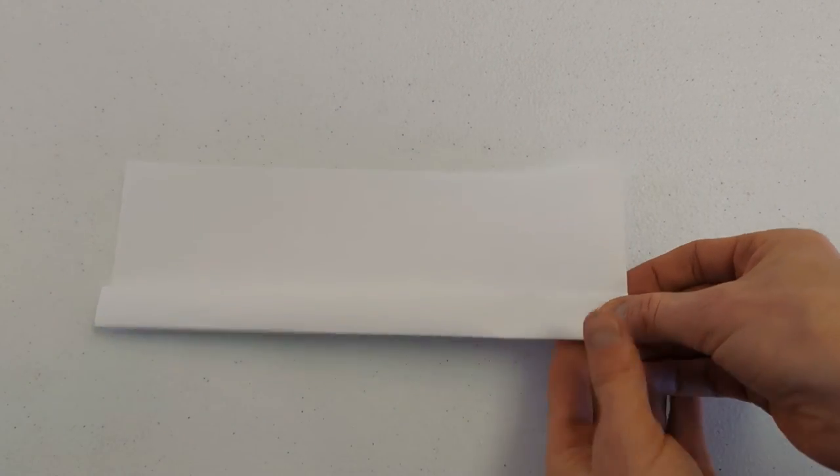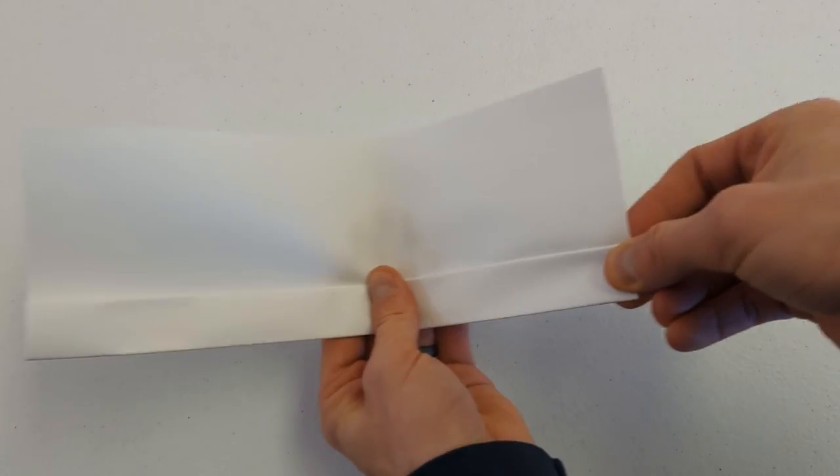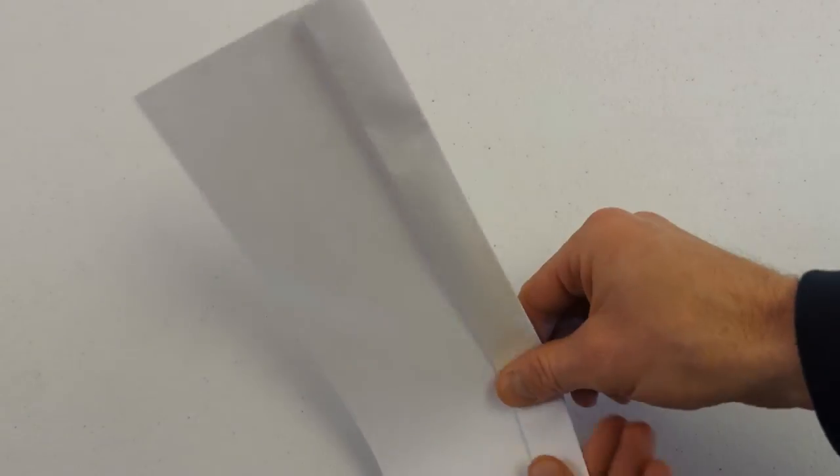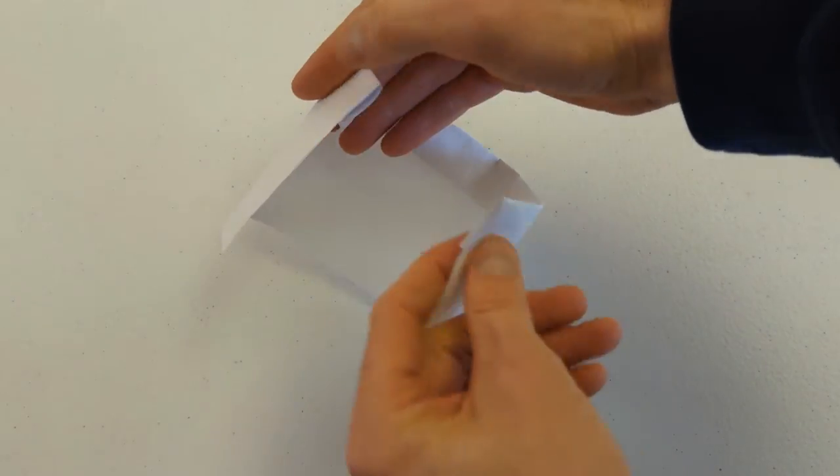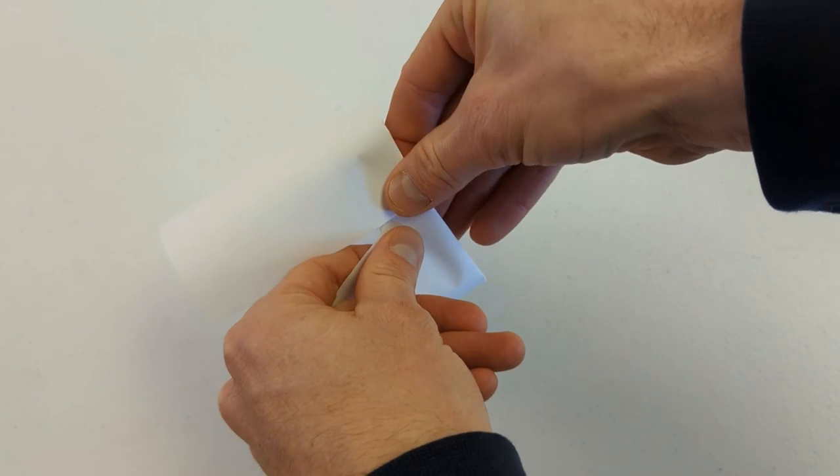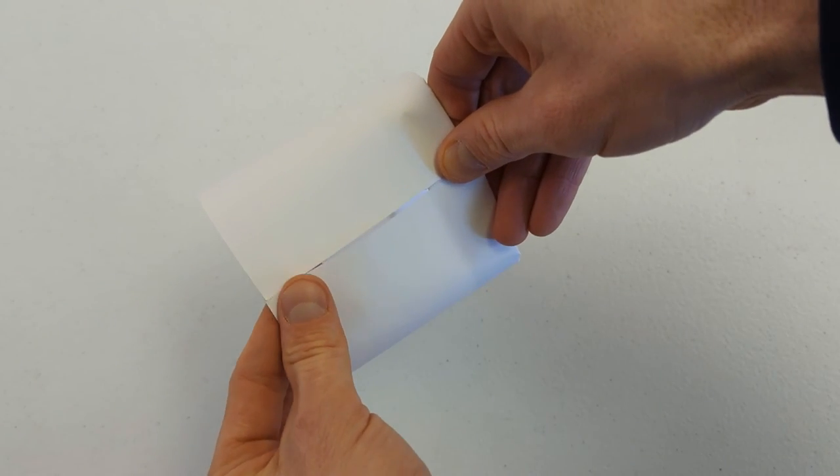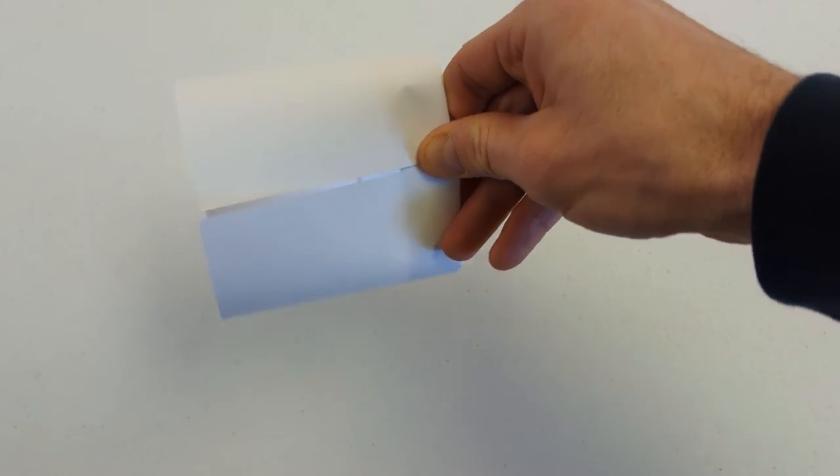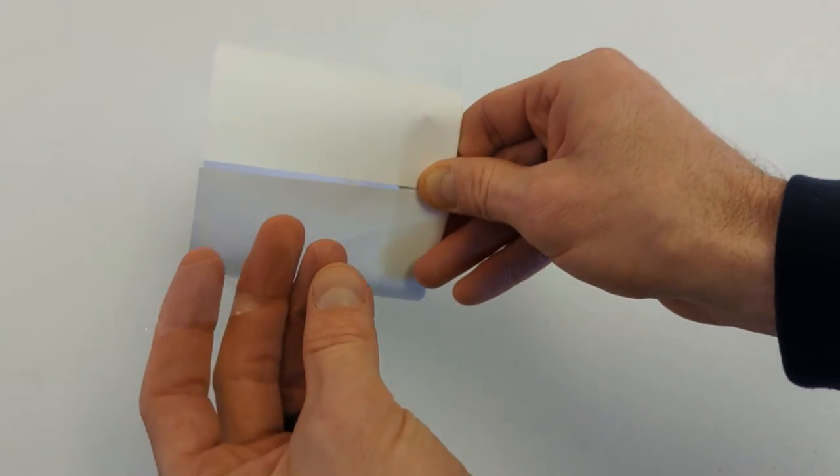So all you do is, you can see how that's a wing, you just make it into a circle. Like this. Tape it. And it starts looking like a kort nozzle, right? Got a little piece of tape over here.